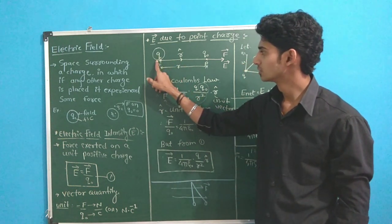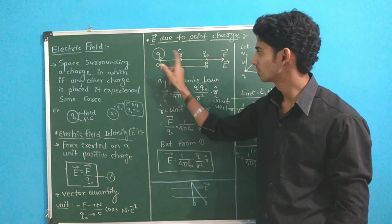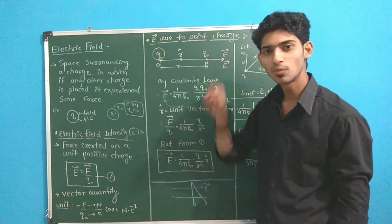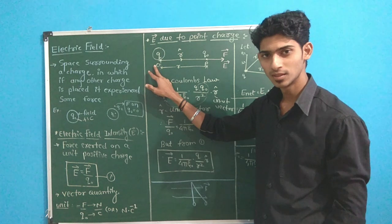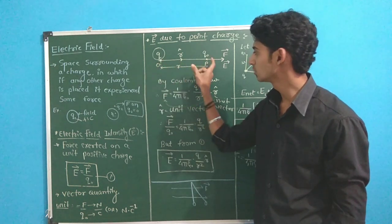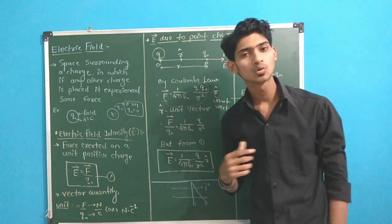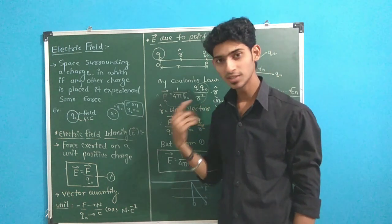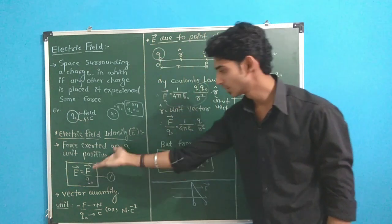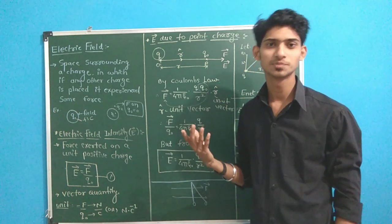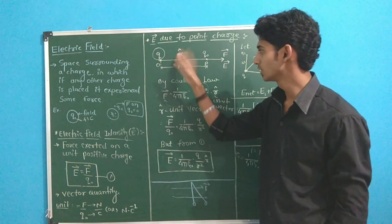Consider a point charge Q at point O. Consider a point P at a distance R from this charge and let's consider one test charge Q0 at point P. I repeat, consider a charge Q at point O. At a distance R from O, consider a point P and a charge at point P is Q0. This is R cap, the unit vector.